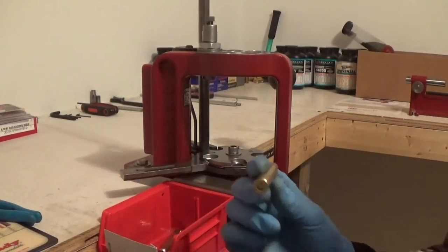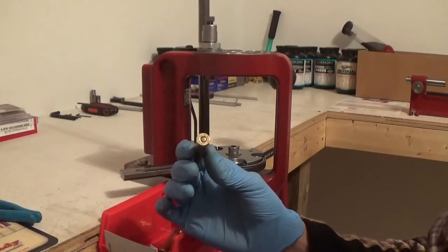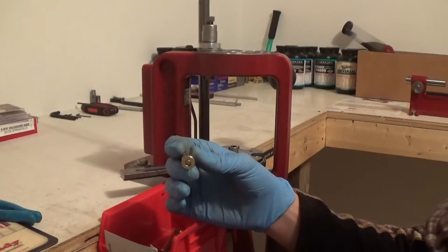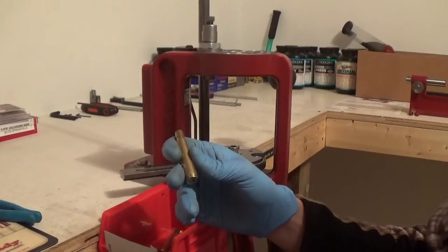Now we got eight pieces of brass resized with new primers in them. Next thing we're going to do, we're going to go over to the cam lock trimmer. We're going to go ahead and trim these down.